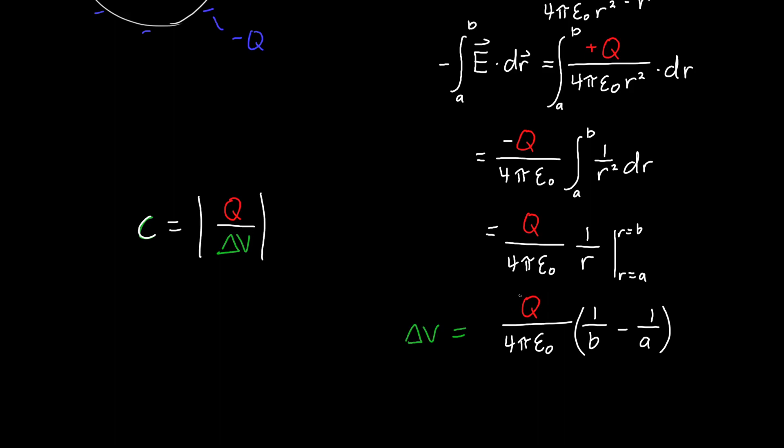Conveniently, delta V has a charge in it, so those two are going to cancel. We've got Q over 4π epsilon naught times 1 over B minus 1 over A, all absolute value.